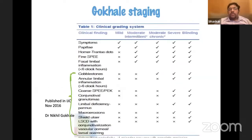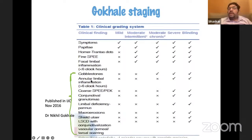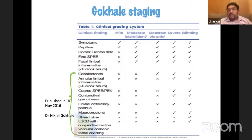Nikhil Gokhale's IGO publication also grades VKC as mild, moderate, moderate chronic, and severe/blinding. Anything in the blinding or severe group, and everything in the moderate chronic group, comes under recalcitrant. The key features warranting this classification include limbal deficiency, severe corneal involvement such as shield ulcers, corneal scarring, pannus, and large conjunctival granulomas — any situation where the cornea is repeatedly involved or vision-threatening.